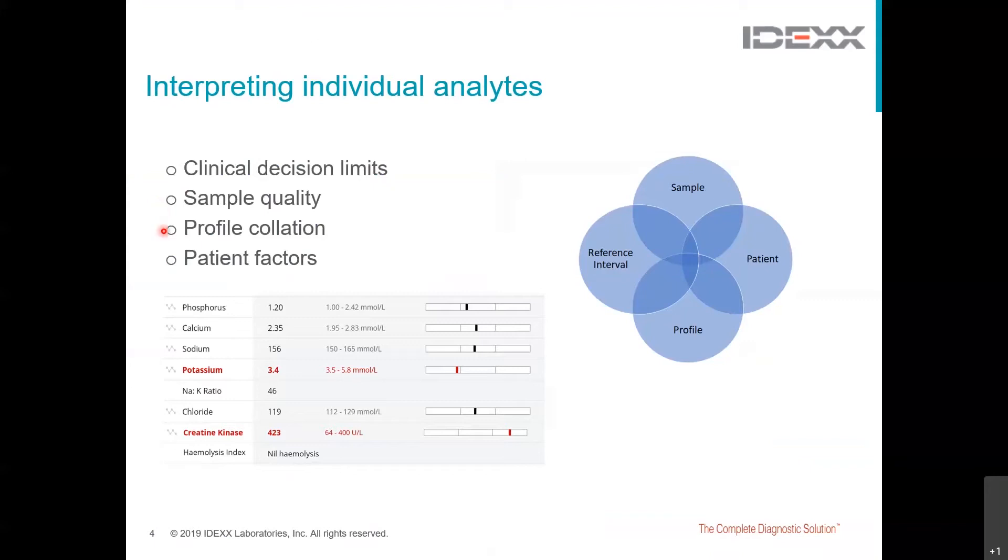With regards to profile collation, it is important to interpret changes in combination with other clinical pathologic findings as abnormalities in one organ system may cause abnormal results in tests that are used primarily to indicate disease in a different organ system. Lastly, remember, we always need to interpret the laboratory data with respect to what we know of the patient. Ultimately, does it make sense?